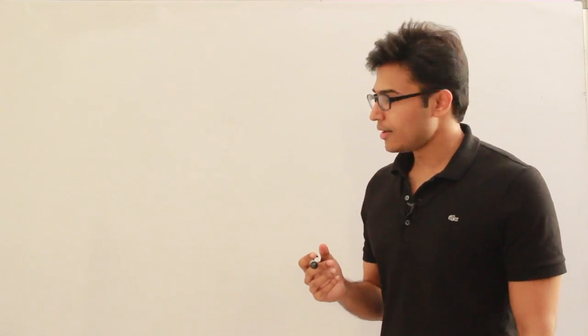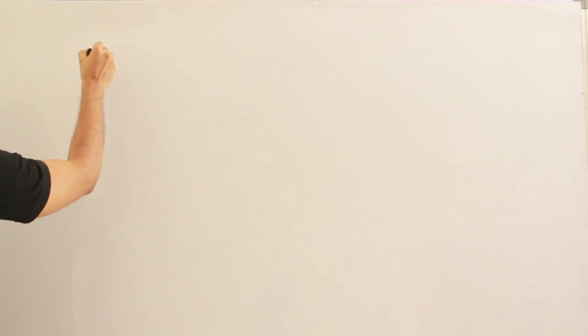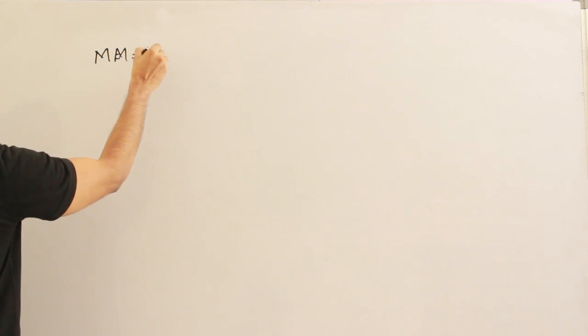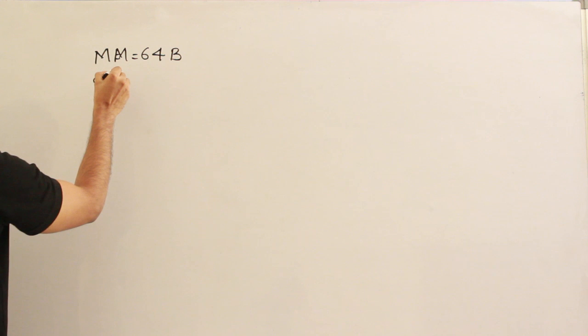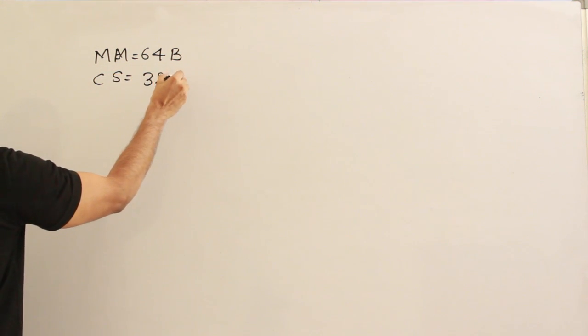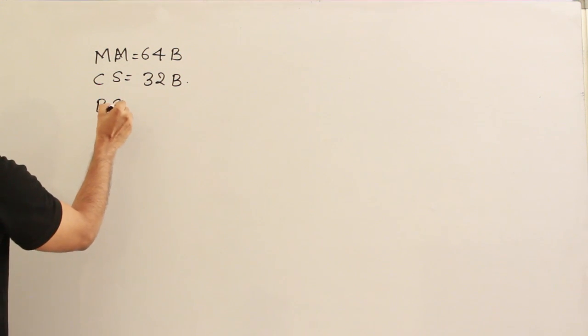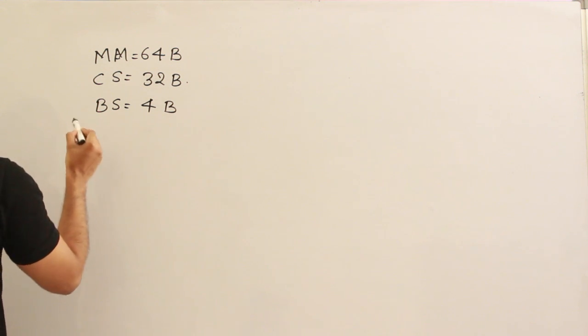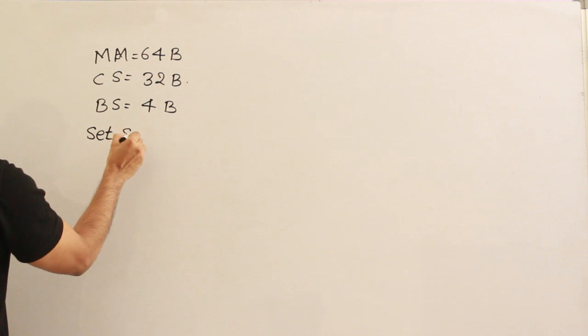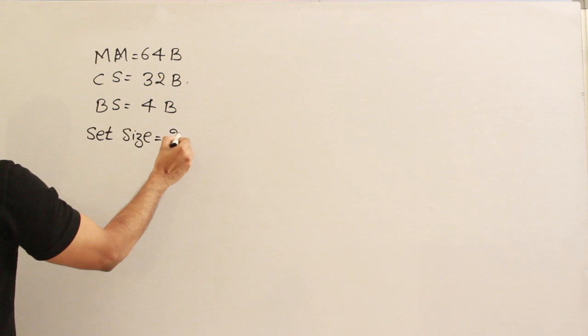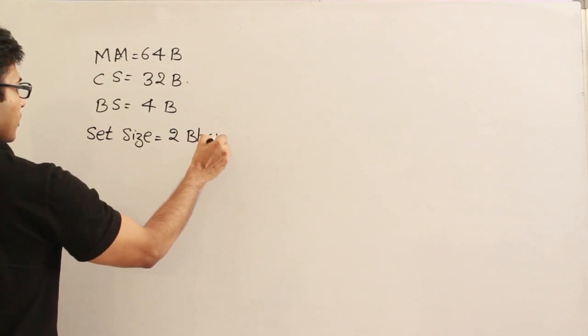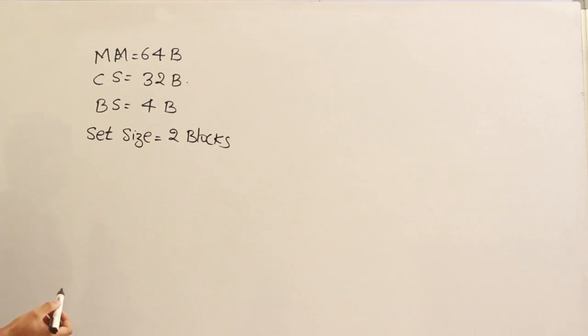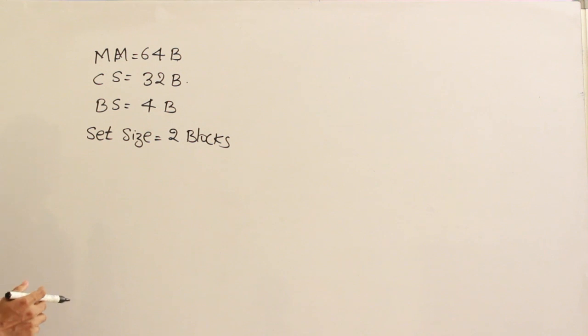Let me take a small example and explain how set-associative cache works. Main memory size is 64 bytes, byte addressable. Cache size is 32 bytes, block size is 4 bytes, and set size is 2 blocks. Two blocks are combined into a set — that is the meaning of set size.